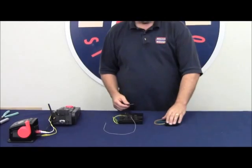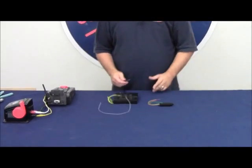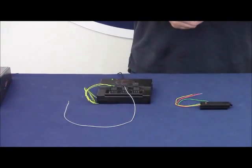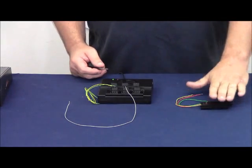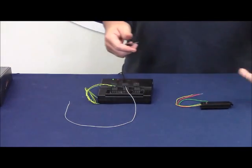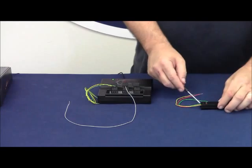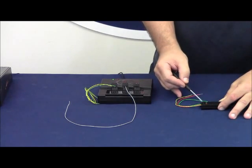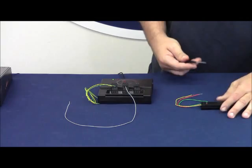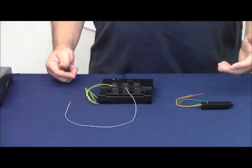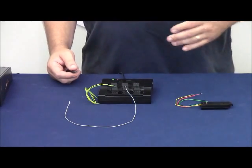The last switch machine we want to show you in conjunction with the SC2 would be the DZ1000 from ZStuff. These switch motors are typically available on guard raves and Ross custom switches. This is the preferred machine for those two vendors. They're very simple. We've got three terminals on the front, left, right, and AC in the center. AC being the hot, which would come from our 14 volt fixed power supply or accessory transformer.